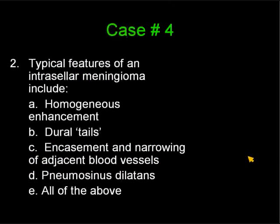Question number two: typical features of an intrasellar meningioma are: A, homogeneous enhancement; B, dural tails; C, encasement and narrowing of the adjacent blood vessels; D, pneumosinus dilatans; and E, all of the above.